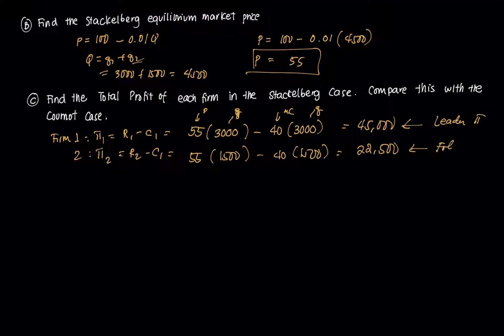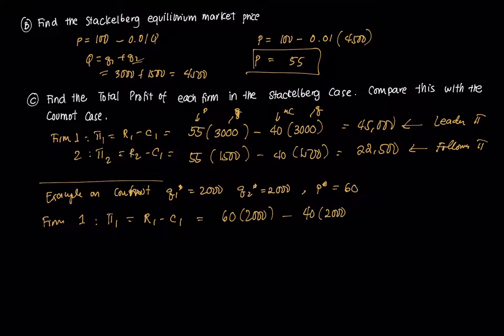And if you compare that to a Cournot case, or if you remember from the example on Cournot, I'll have it linked in the description box below. That's Q1 star equals 2000 and Q2 star equals 2000, with P star being equal to 60. If you solve for firm one's profit in that case, that's 60 times 2000 minus 40 times 2000, because the price is now 60, not 55. The marginal cost remains at 40. This is 40,000. And the same case is true for firm two, which is also 40,000 since they have exactly the same quantity.